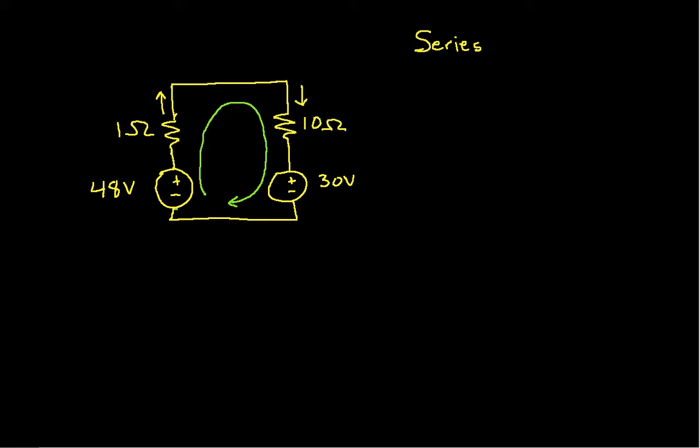Similarly, all of the current that flows through the 10 ohm resistor flows through the 30 volt source and through the 48 volt source. So this is a series connection.